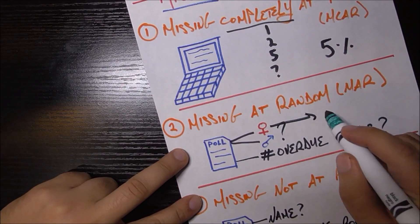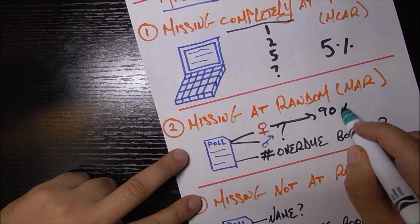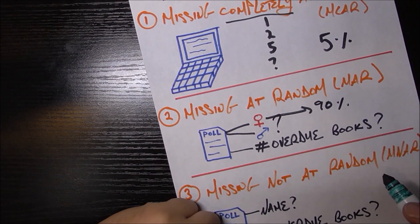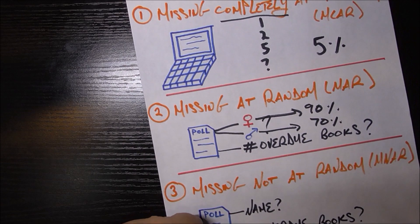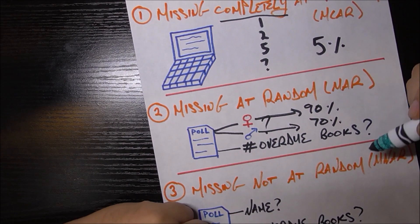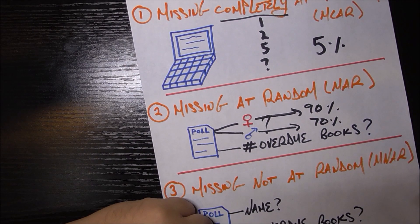Furthermore, let's say that females reply to your poll at a 90% rate, so there's only 10% missing data for females. While for males, they're only responding at a 70% rate, so there's a much higher 30% missing data rate for males.